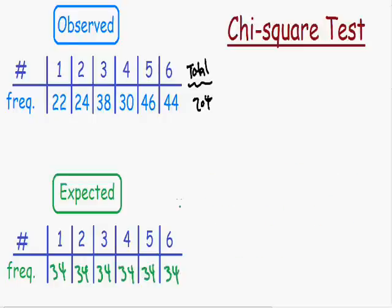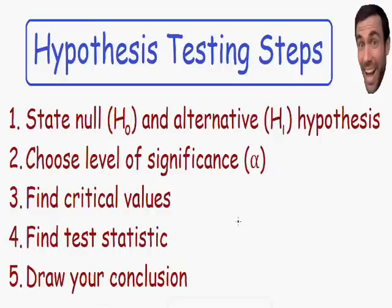Now that we have our observed values and our expected values, let's perform our chi-square test and see how good the observed values fit the expected values. We're going to use the same steps for a chi-square test that we would use for a hypothesis test. Step number 1 says to state the null and the alternative hypothesis.